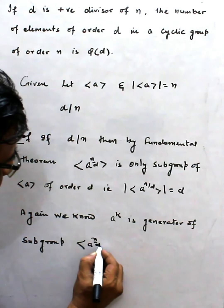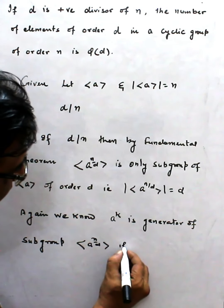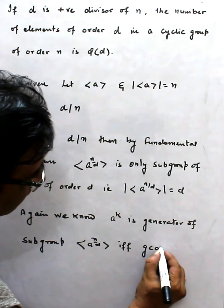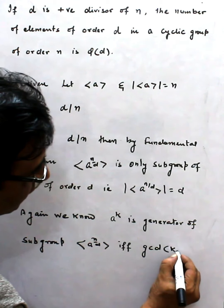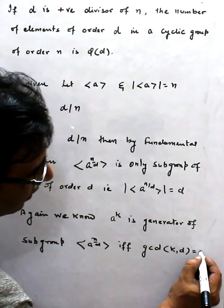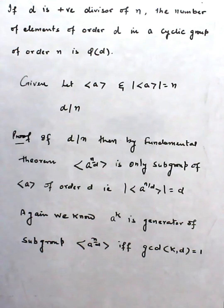<a^(n/d)> if and only if gcd(k, d) = 1. That means k and d are coprime.